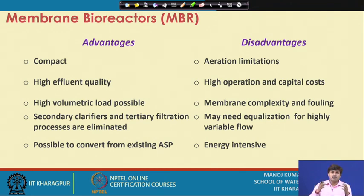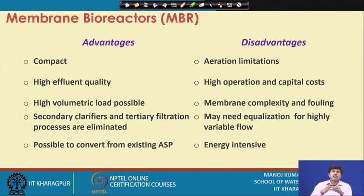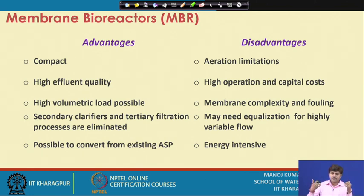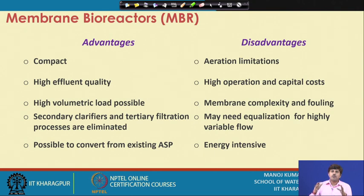The advantages of membrane systems include being quite compact — there is no need for a secondary settling tank or a sludge recycling mechanism, so the area requirement is low. Because there is a lot of biomass in the system, a high organic loading rate can be applied to the aeration system, so the system can withstand high organic loading and a compact system can be designed for the same flow.